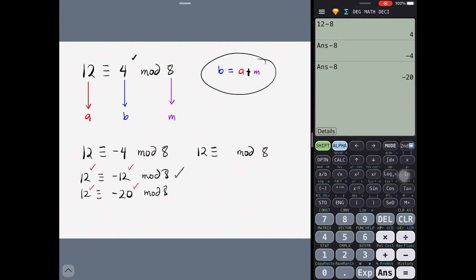Aside from subtracting 8, we can actually add 8, and so 12 plus 8 would give us 20. Continuously adding 8 would give us 28, 36, and so on.